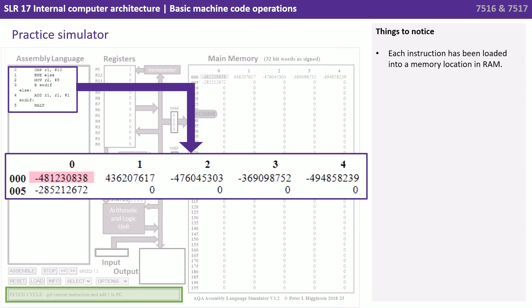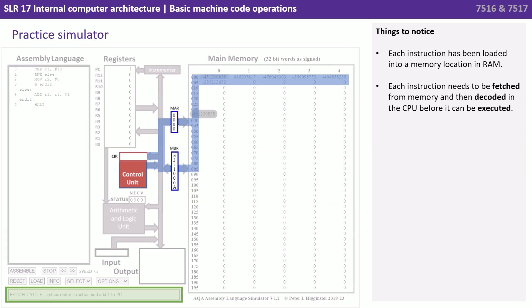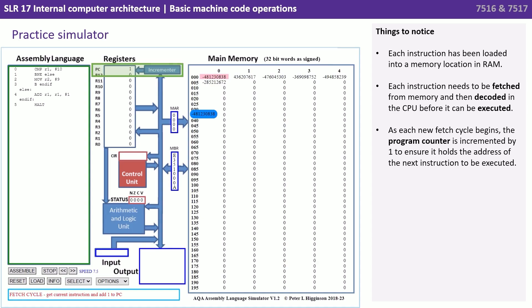A couple of things to notice: each instruction has been loaded into a memory location in RAM as you'd expect. Each instruction needs to be fetched from memory and then decoded in the CPU before it can be executed. As each new fetch cycle begins, the program counter is incremented by one to ensure it holds the address of the next instruction to be executed.